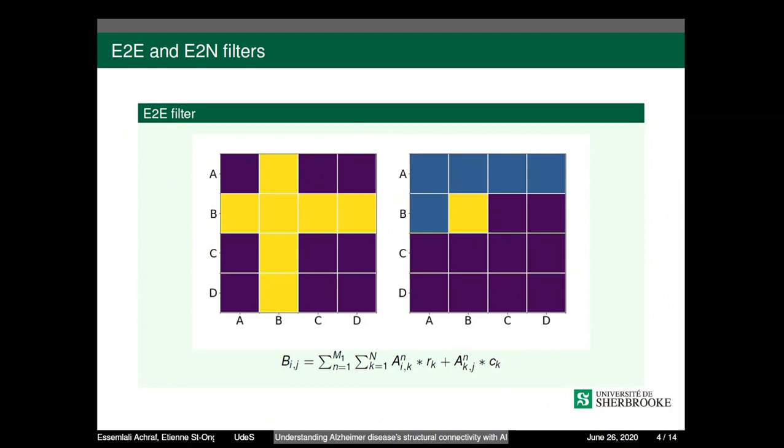The edge-to-edge filter captures the first-order connectivity in the brain networks. It's formed of two one-dimensional convolution filters when applied for the row and when applied over the columns, as demonstrated by the following equation.